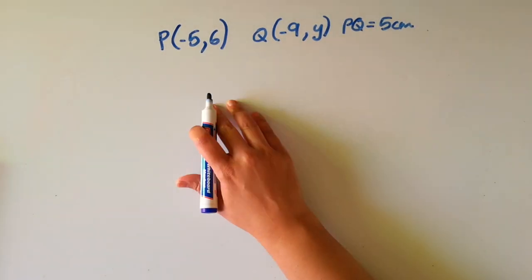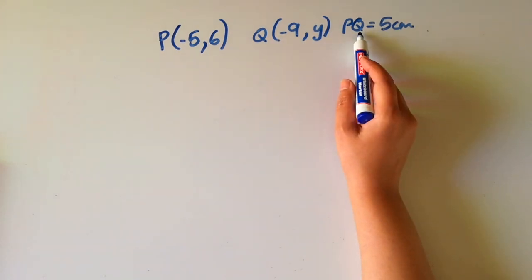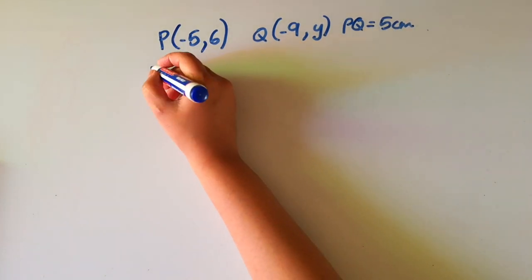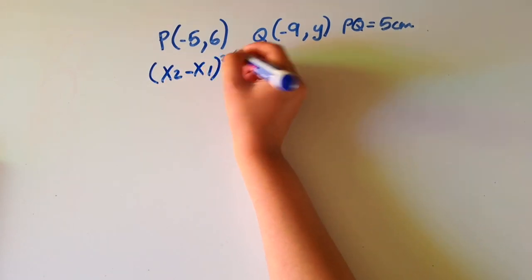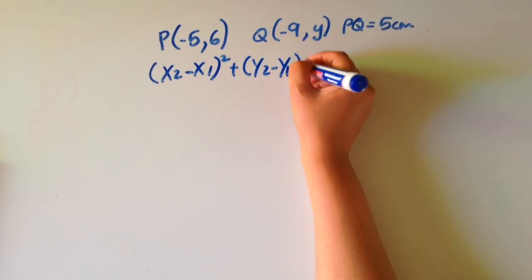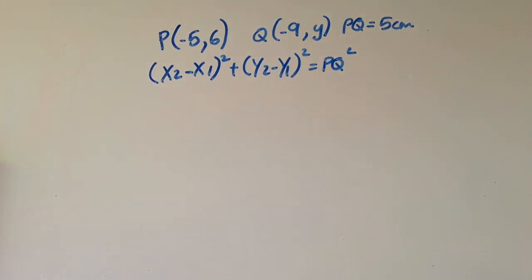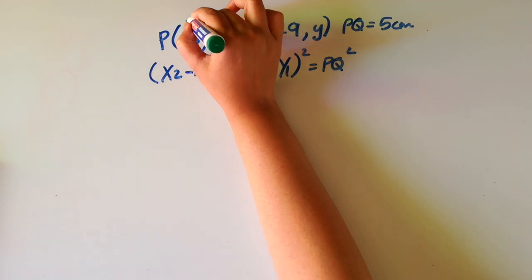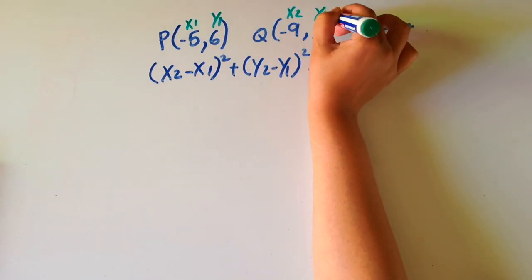So as we learned in the previous example, the distance between these two points, PQ, is (x2 minus x1) squared plus (y2 minus y1) squared, which will give me PQ squared. As always, let's label this one x1, y1, x2, and y2.